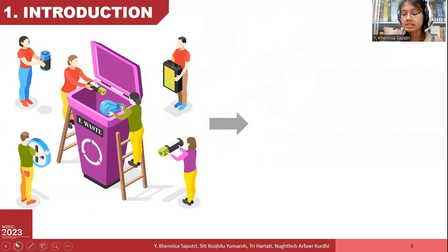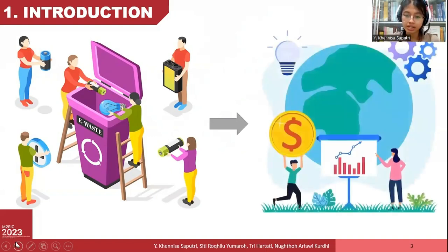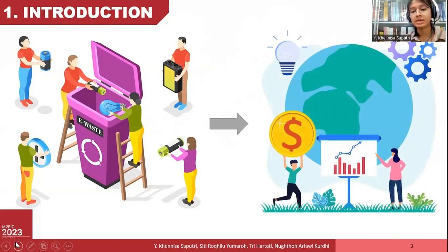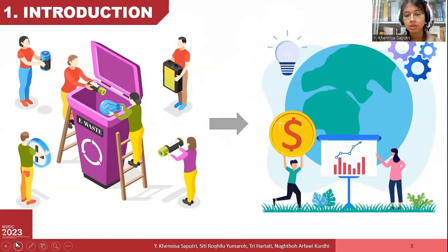The circular supply chain itself is a supply chain that consists of a forward and a reverse supply chain, with the process beginning with manufacturing and ending with the recovery of discarded items into new ones.